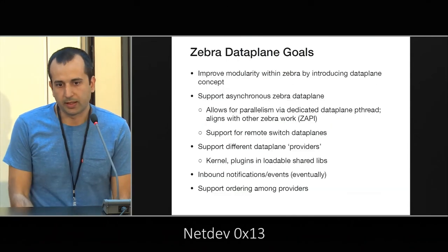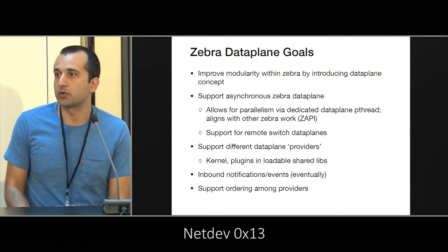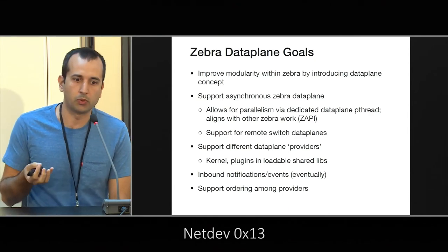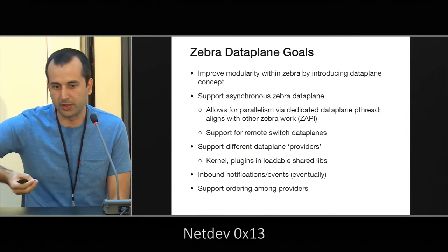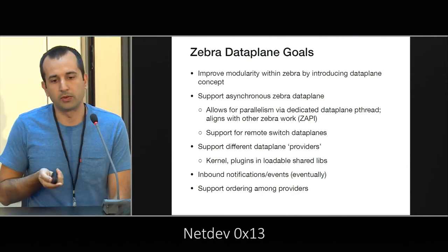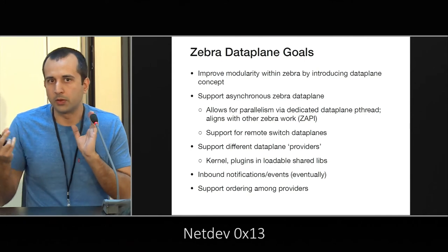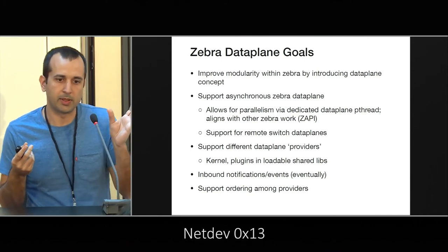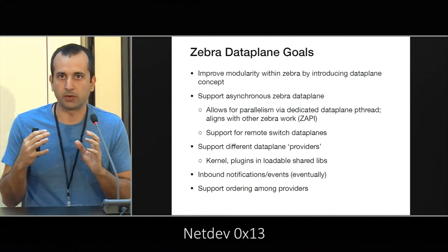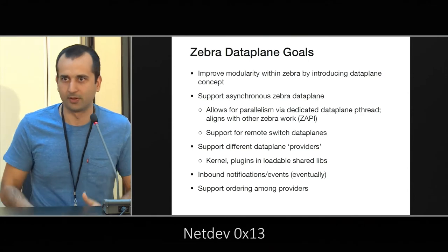Back to the data plane part — the goal was to do the same kind of thing for the kernel forwarding plane programming: allow a separate data plane thread to do that part of the work. We use a similar queue-based approach between the Zebra main thread and the Zebra data plane thread, passing objects between them so that you don't have to change the single-threaded assumptions of the route processing logic.